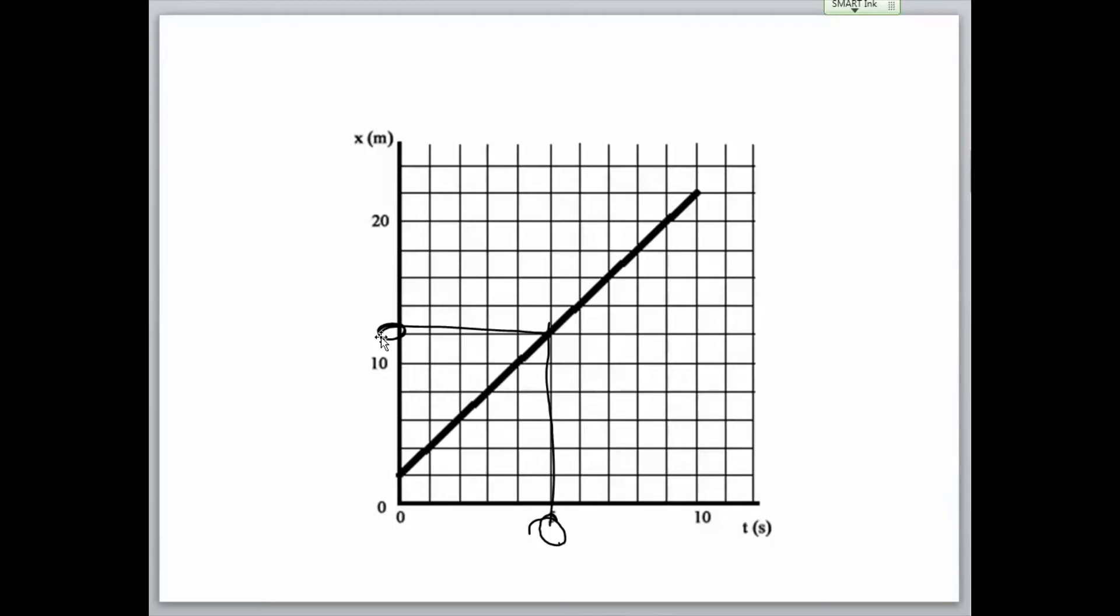Velocity is a rate of change in displacement divided by time. Or, in other words, the change in position divided by time. Put more simply, the slope of the position graph is your velocity.